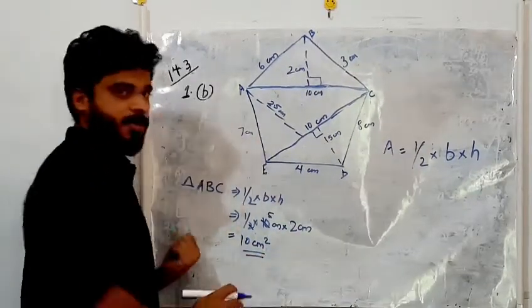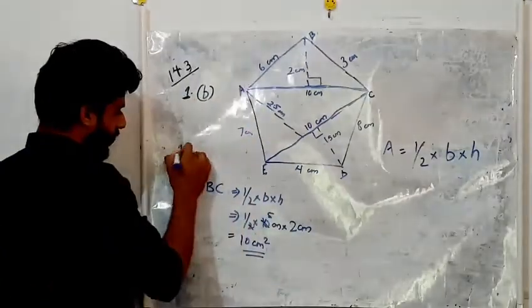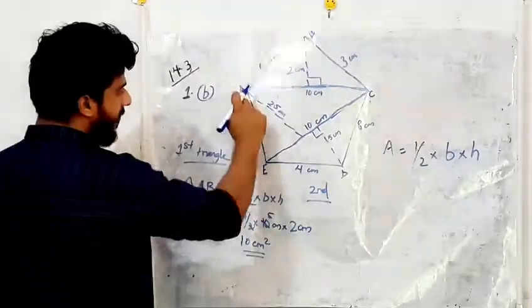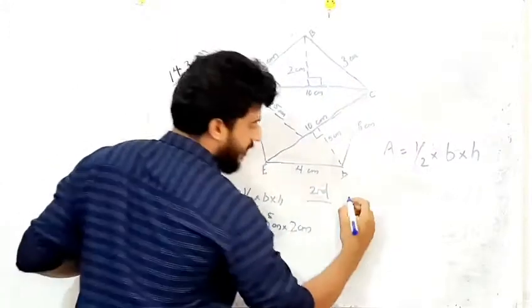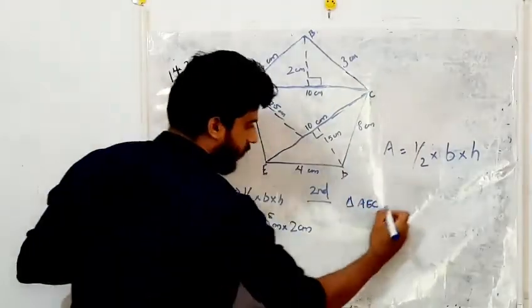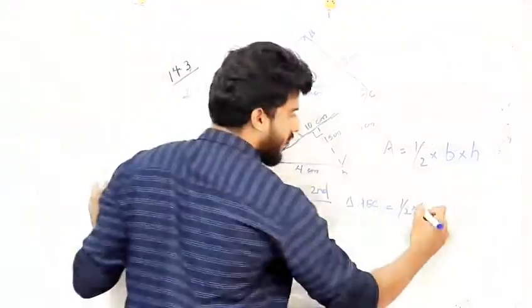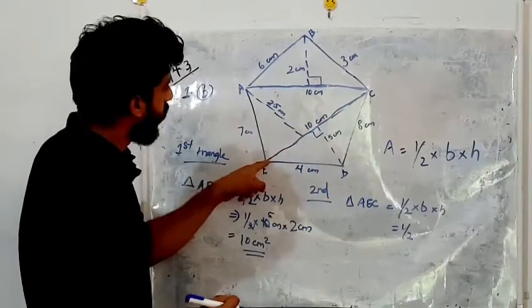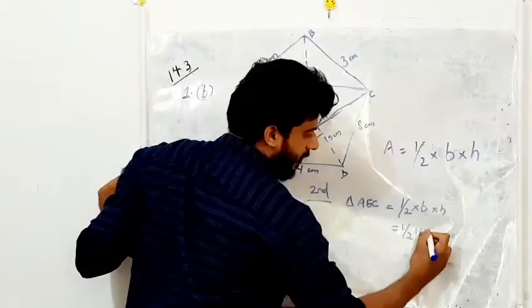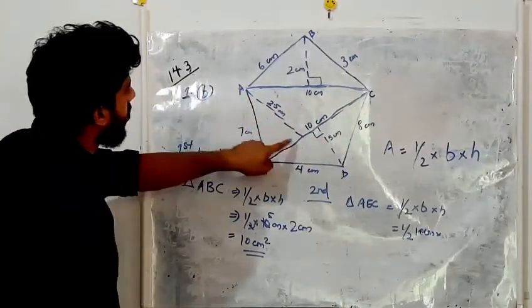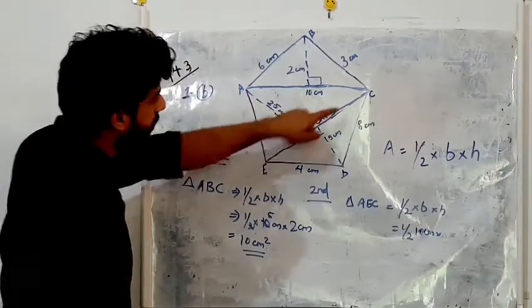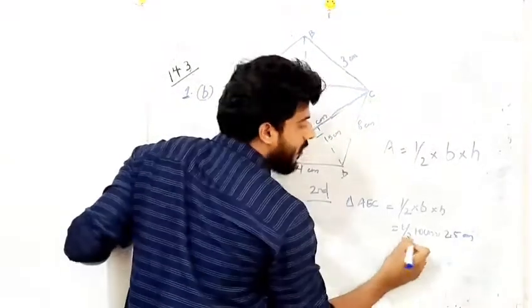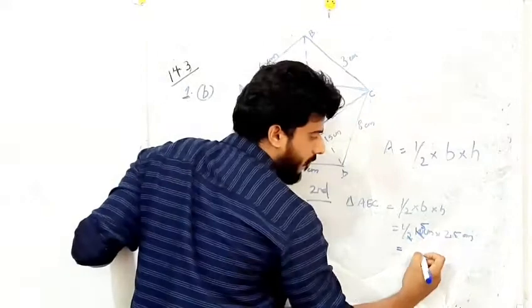For the second triangle AEC, area = ½ × base × height. The base AC is 10 cm. The height is the perpendicular line to the base, which is 2.5 cm. So ½ × 10 × 2.5 — here 2 and 10 cancel giving 5, so 5 × 2.5 = 12.5 cm². That is the area of the second triangle.